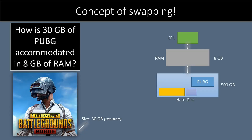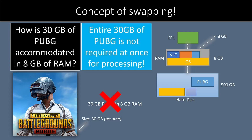The RAM is already occupied by the operating system, so from 8GB some space is already taken by the OS. Some additional space may be occupied by other software like VLC player, web browser, and so on. You are left with RAM of less than 8GB — it is not at all possible to place 30GB of PUBG into 8GB RAM. What you need to understand is that not the entire 30GB of the PUBG program is required at once for processing. The portion that is required right now is loaded into RAM from the hard disk, while the rest of the program remains on the hard disk.